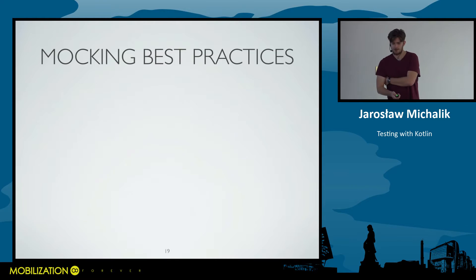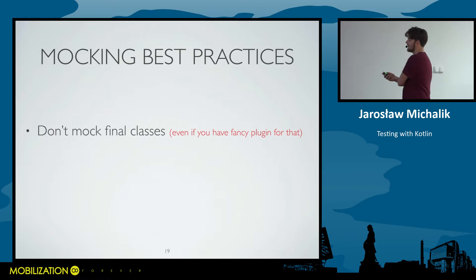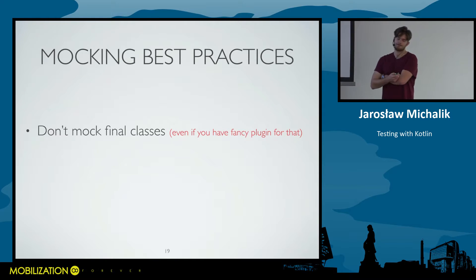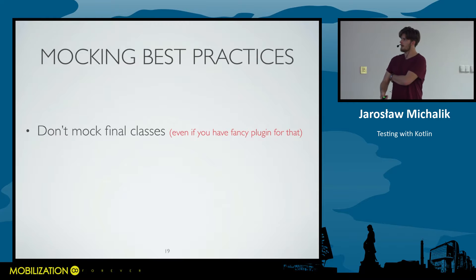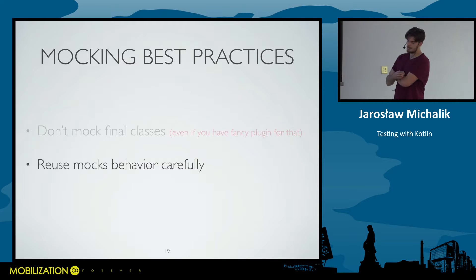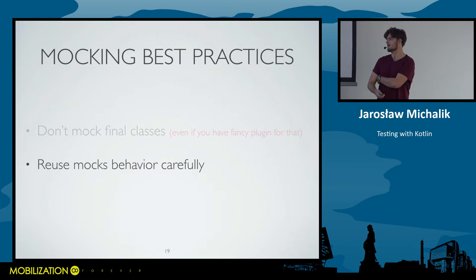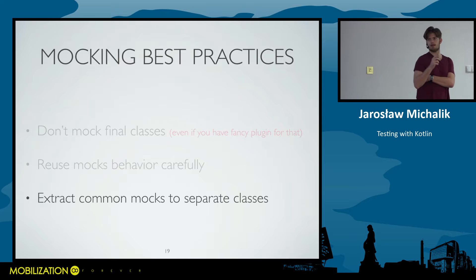We only scratched the surface of mocking, but I have some final thoughts. Don't mock final classes, even if you have a fancy plugin for Mockito to do that. It's better to hide behavior behind an interface — expose behavior, but hide implementation. Reuse your mocks carefully, especially when you are writing specifications in that large lambda. When your object may be stateful, it will go non-deterministic. And the last thing is that you should extract common mocks to a separate class — once you do that, your colleagues on the team will thank you.